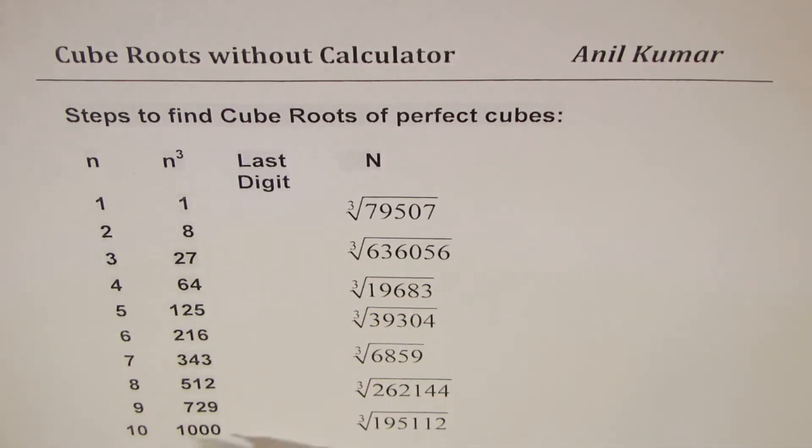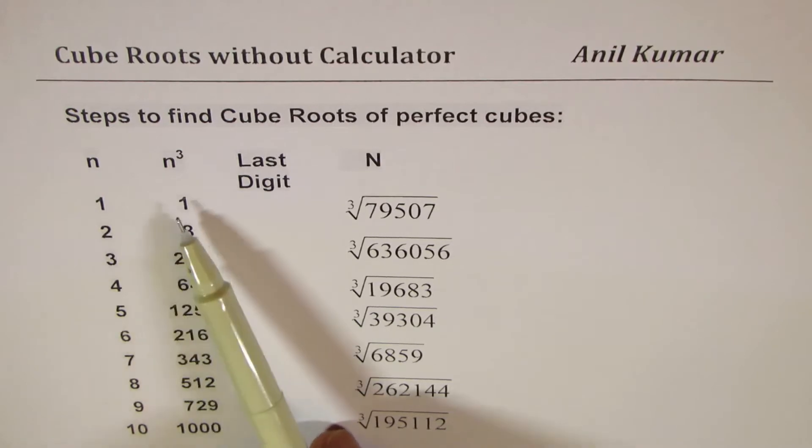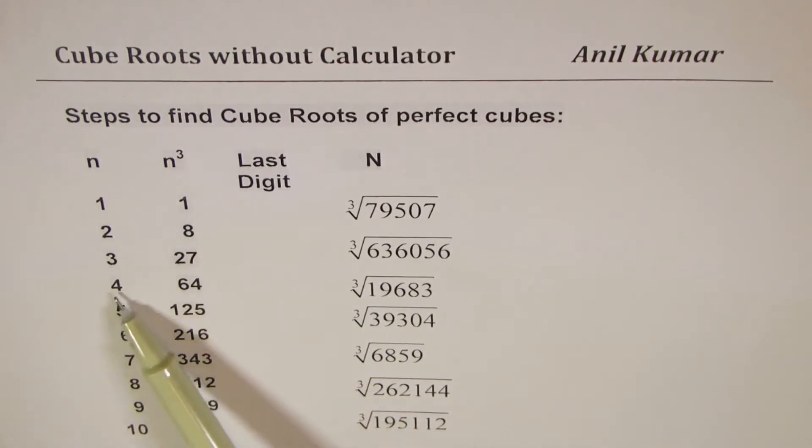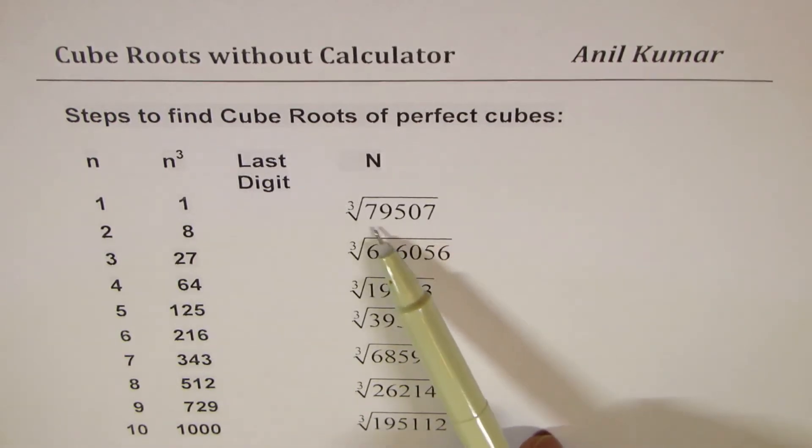So for learning process I have the list right there. 1 cubed is 1, 2 is 8, 3 is 27, 4 is 64, 5 is 125, and so on. To find the cube root of any given number, what we really need to know is the last digit of any cube.